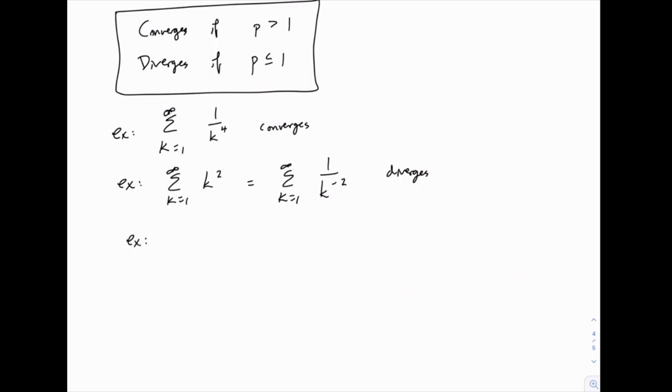There are others like, for example, 1 over the square root of k. We could rewrite this as 1 over k to the 1 half. And again, 1 half is less than or equal to 1, so that diverges.